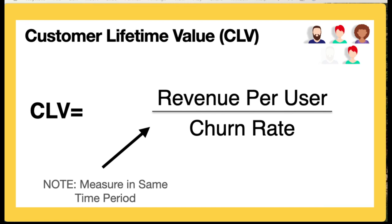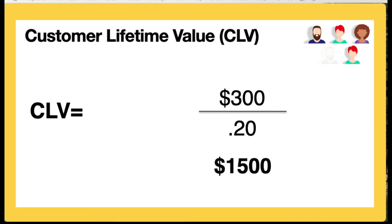Notice that the measure has to be in the same time period — if you're measuring by months, then you need the churn rate by months. In this case I've been using years. So assuming the profit received from a customer in a given year is $300, then $300 divided by a churn rate of 0.20 means I receive $1,500 on average from a customer. That's the customer lifetime value given that particular churn rate.